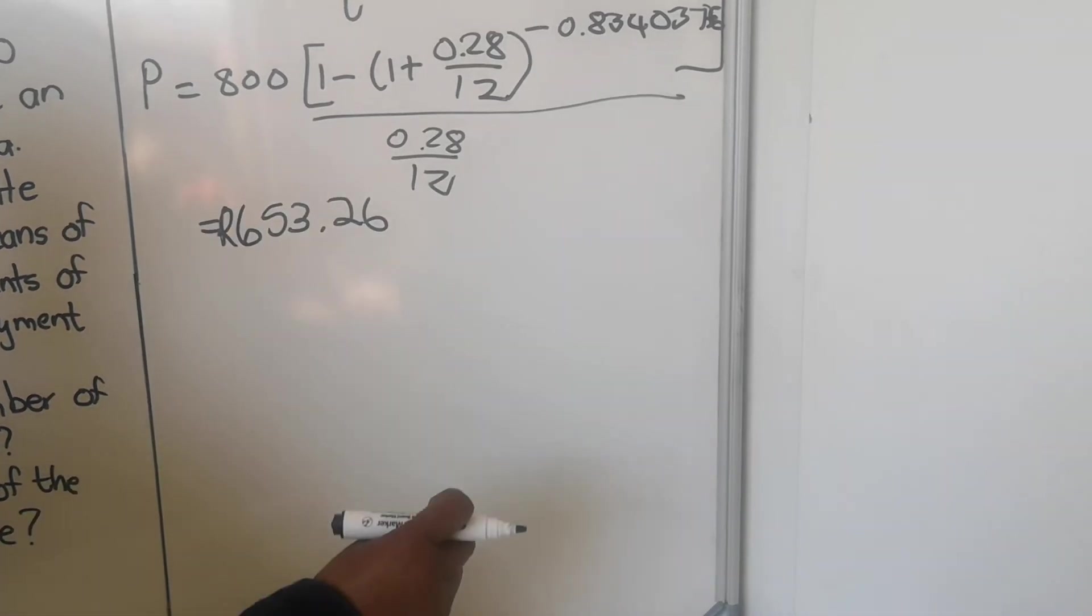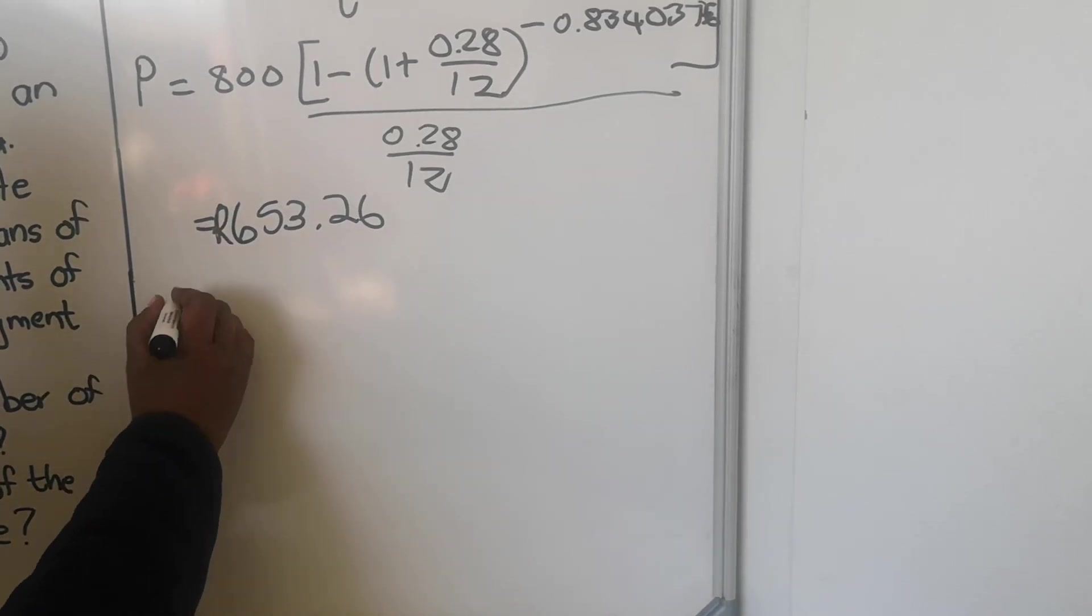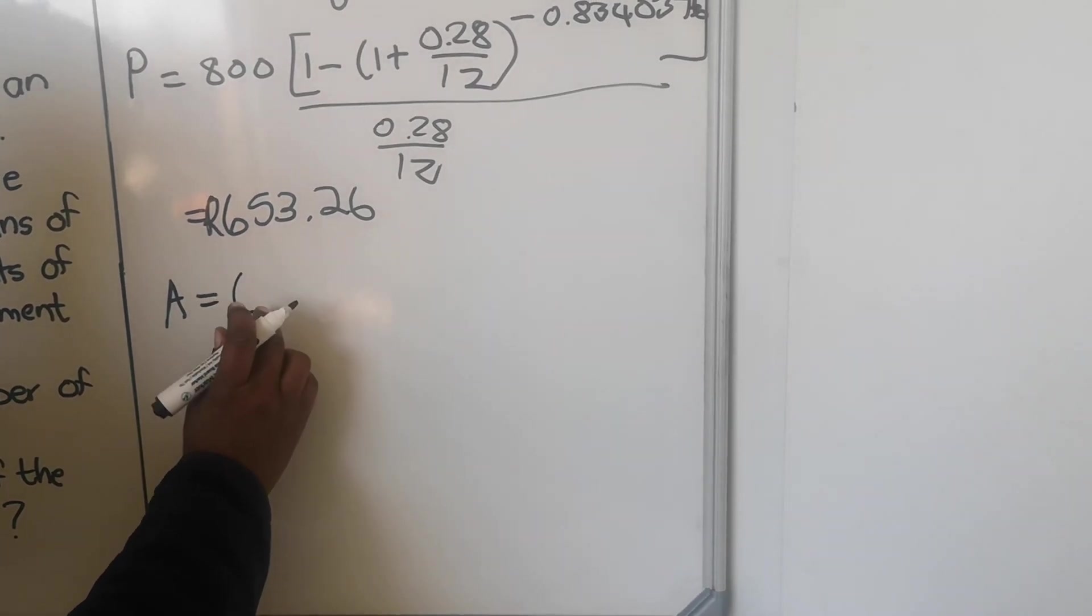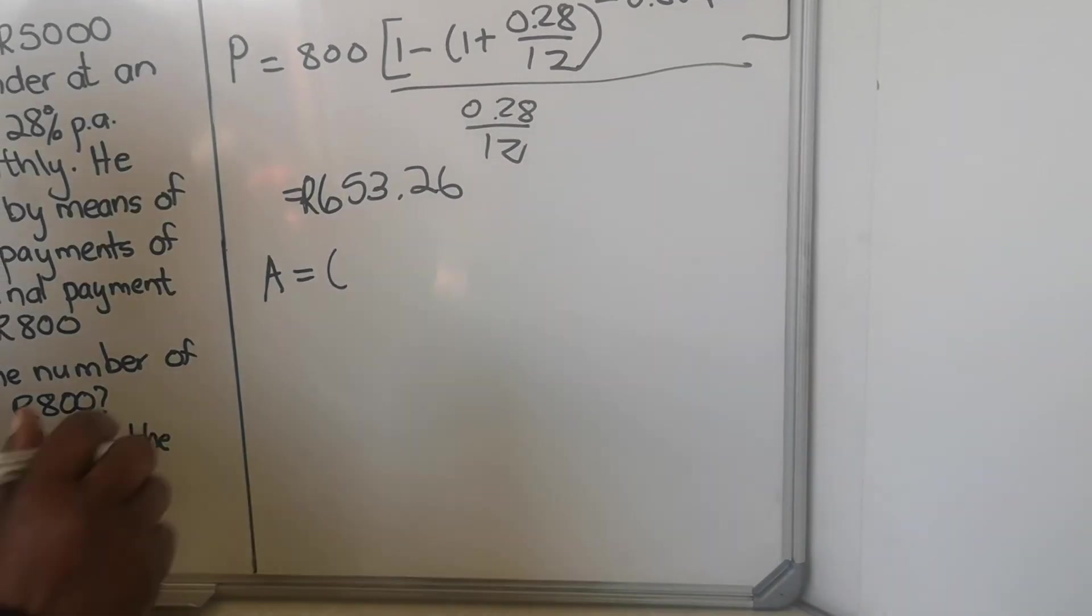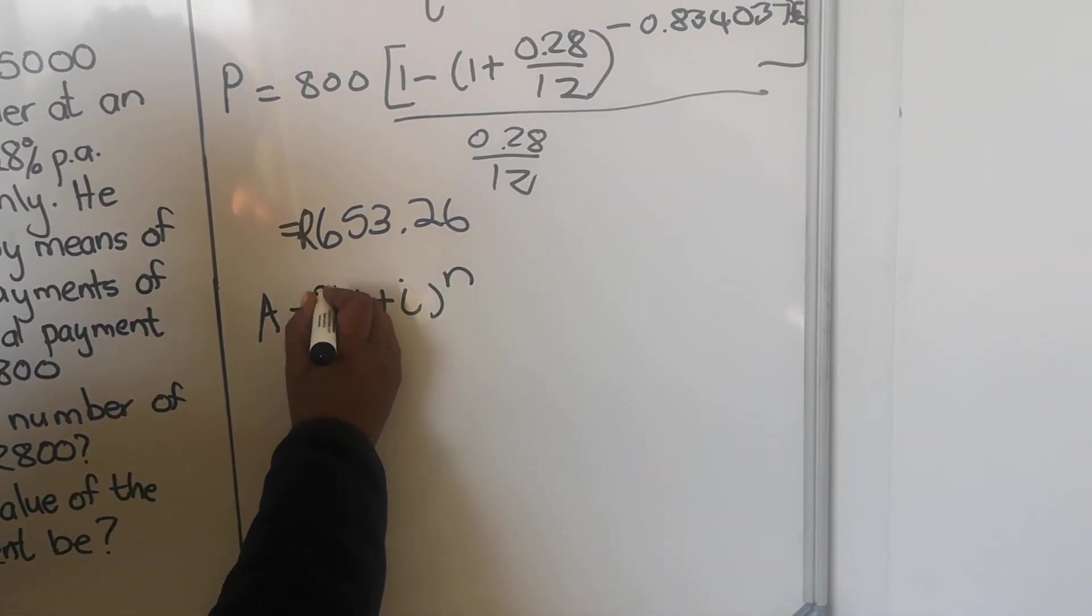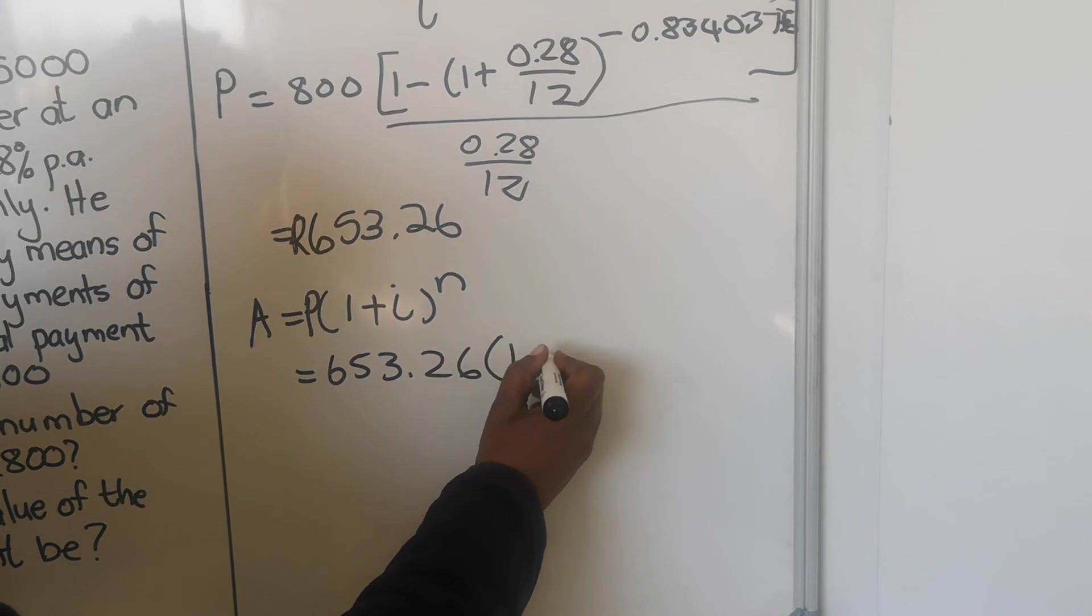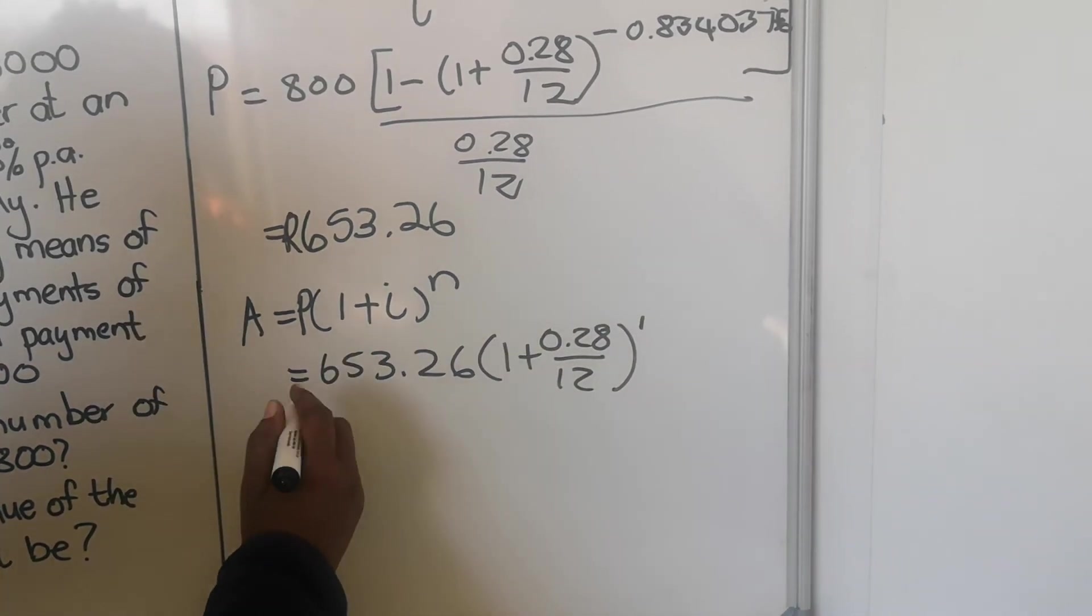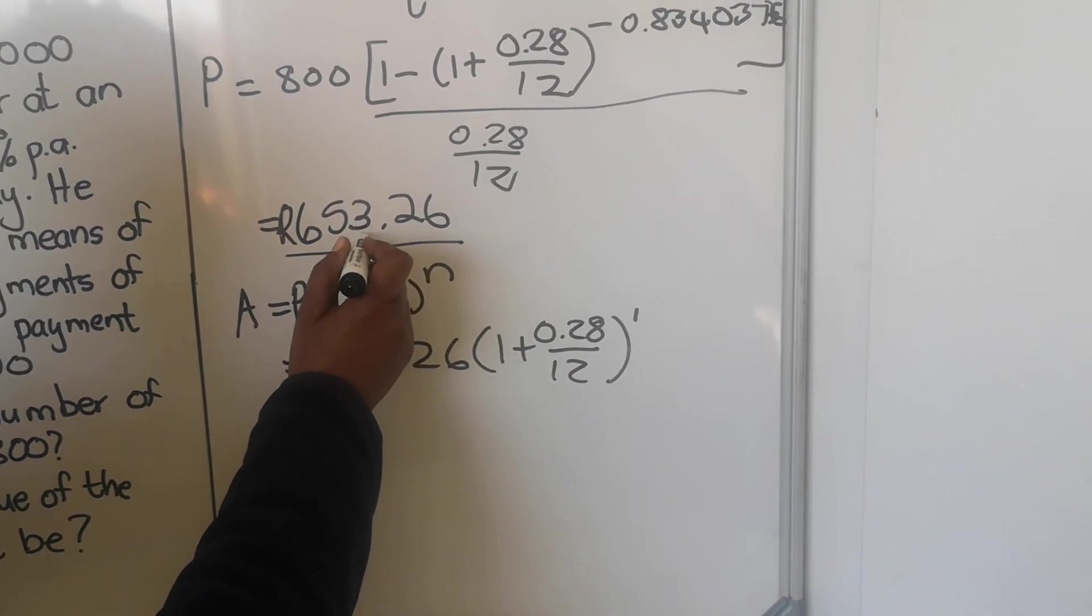It means after paying the last R800, this money will be left to be paid. But the catch is you're going to pay that money at the end of the month, so you need to calculate one month interest for this amount. So you're going to use the Grade 11 formula of the compound interest. Let me look at the formula - I just forgot the formula of the compound interest. It's 1 plus i to the power n. So I've left the P. Your P is 653.28 into 1 plus interest is 0.28 over 12.